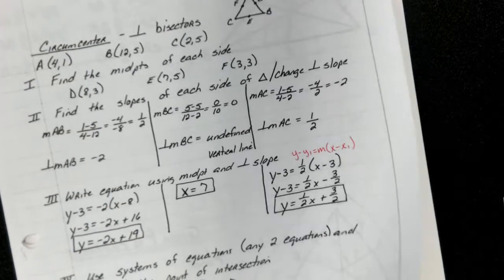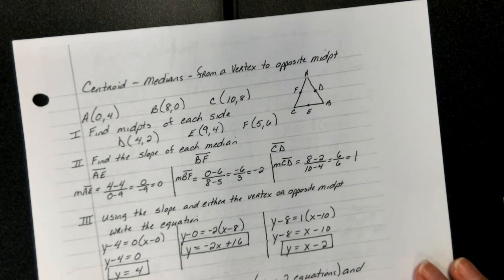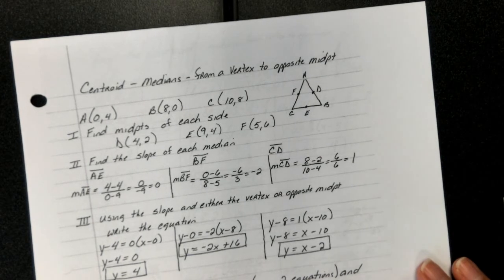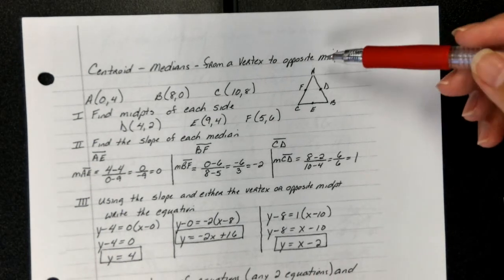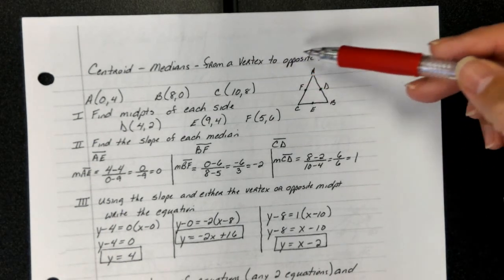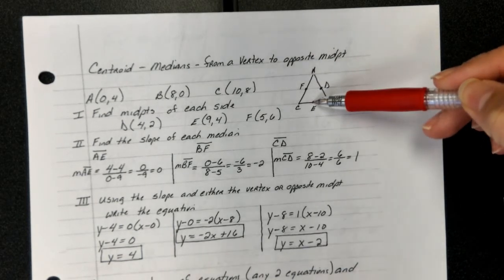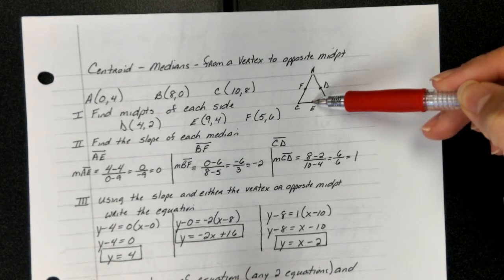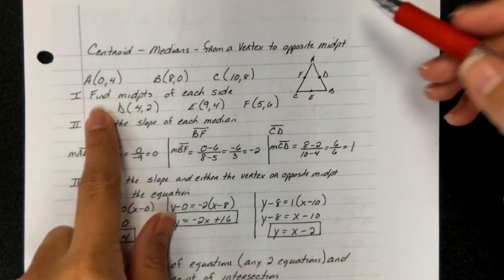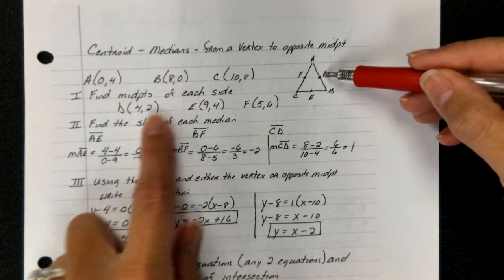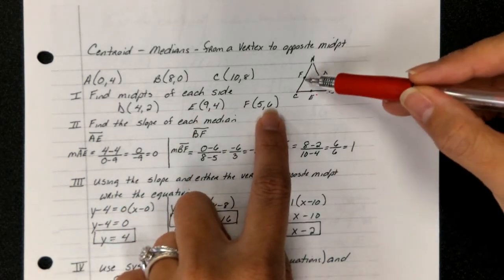Now if I give you a centroid, a centroid means that your special line segment is a median, so from a vertex to the opposite midpoint. Again, I'm giving you the vertices of the triangle. AB's midpoint would be D, BC's midpoint would be E, and AC's midpoint would be F.